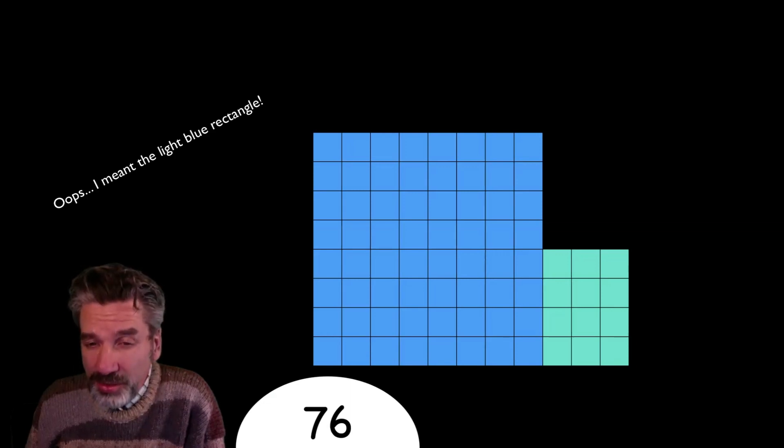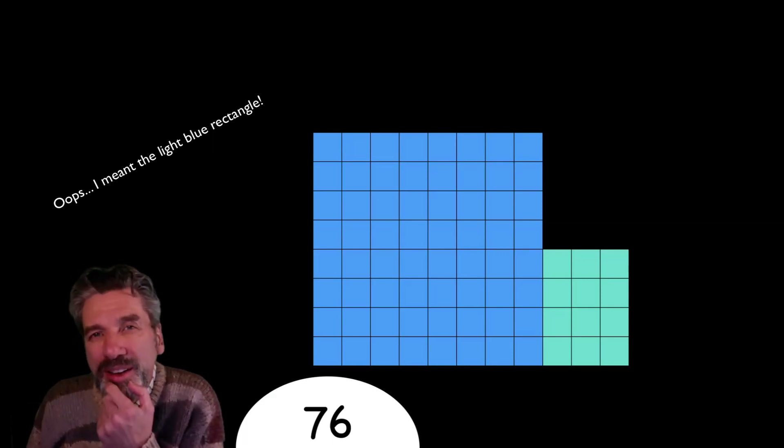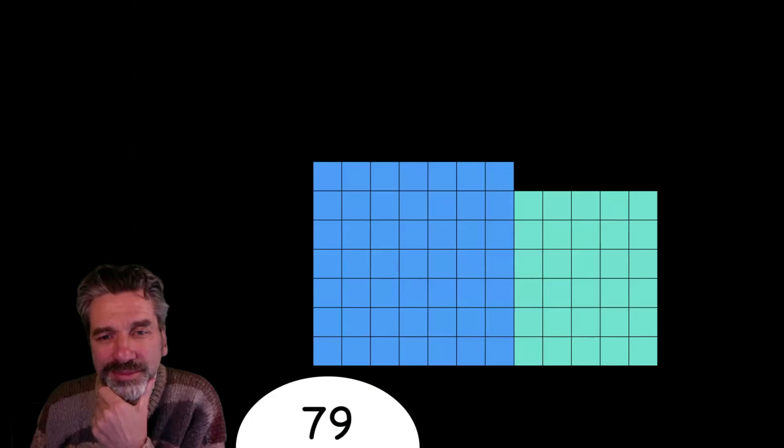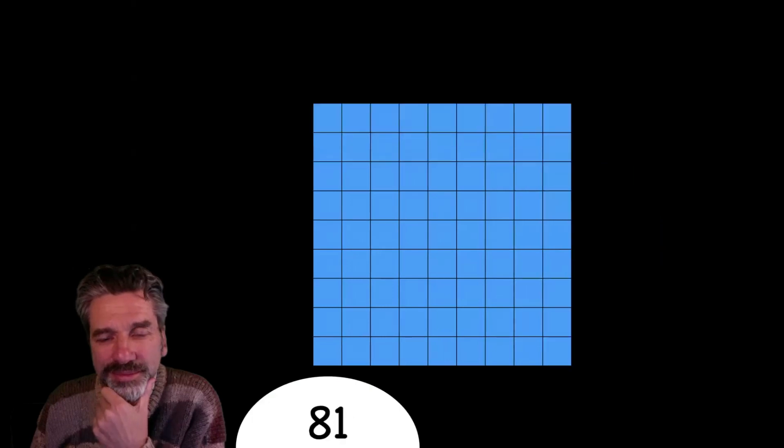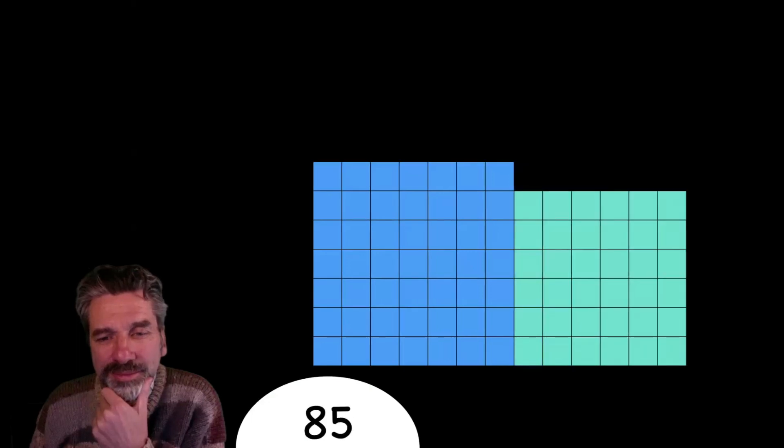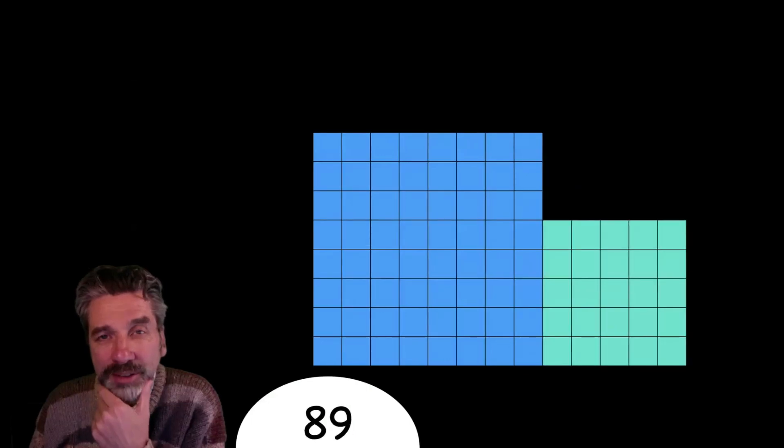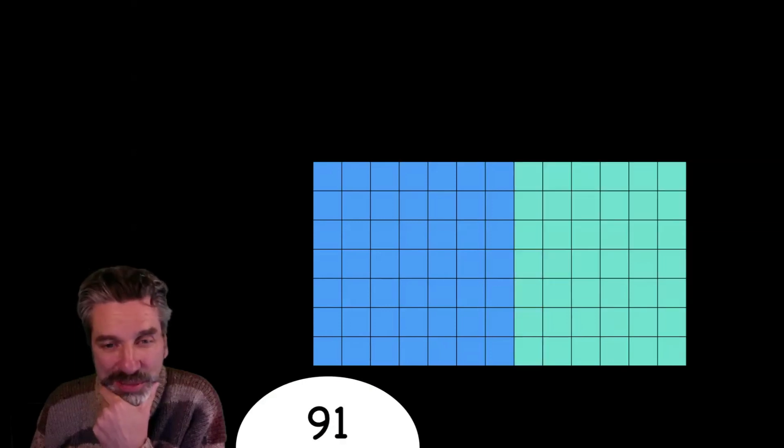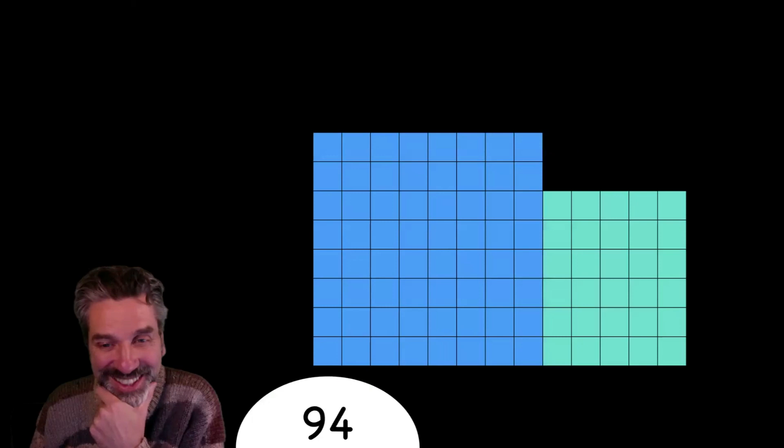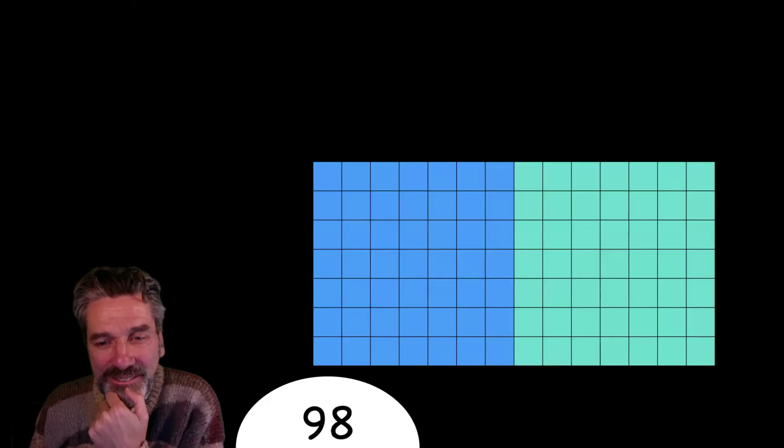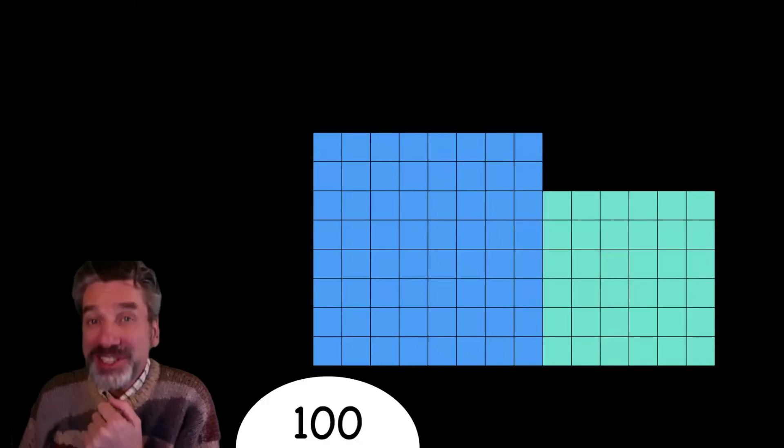So I'm not going to tell you. Maybe we'll go on to 100, and then I'll tell you a little bit about the light blue square. Again, if you can predict when the next impossible number is, that would be impressive. It would be particularly impressive because it doesn't appear before 100.